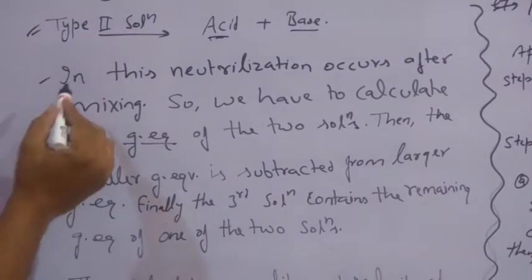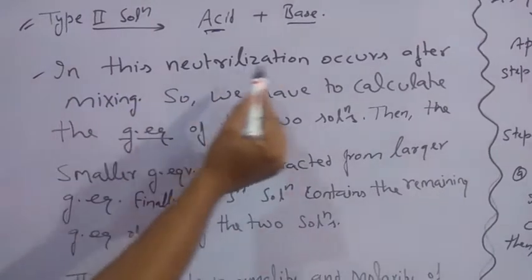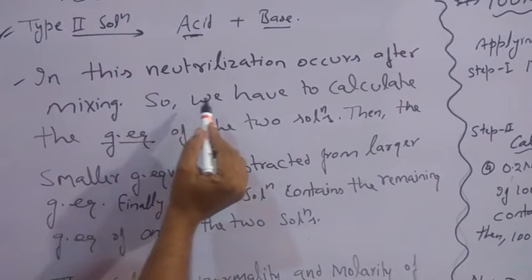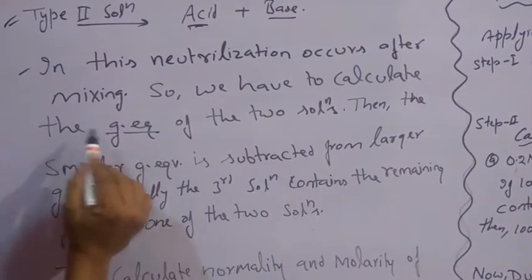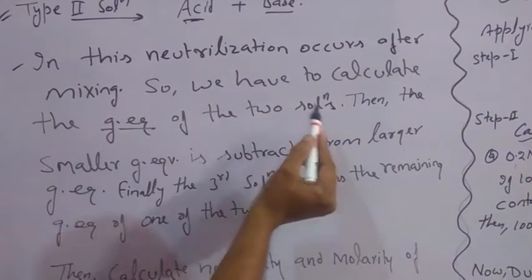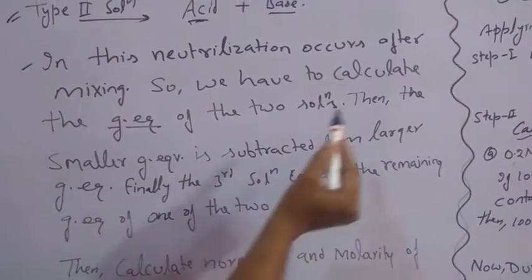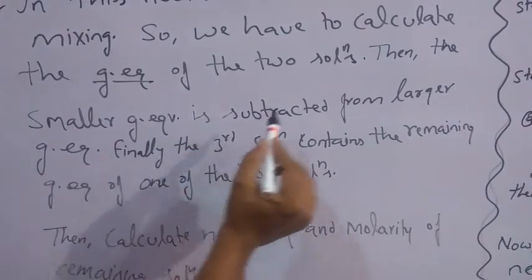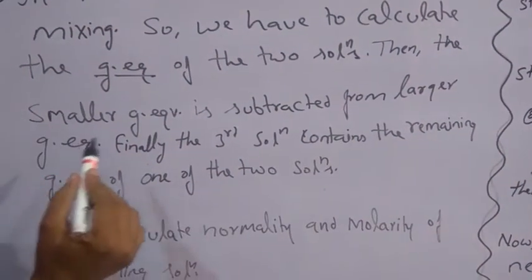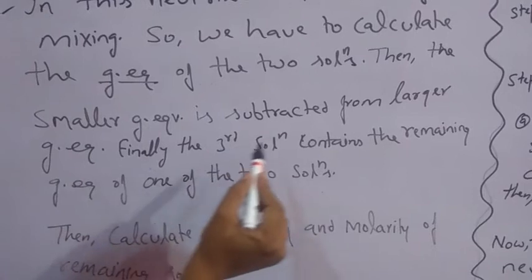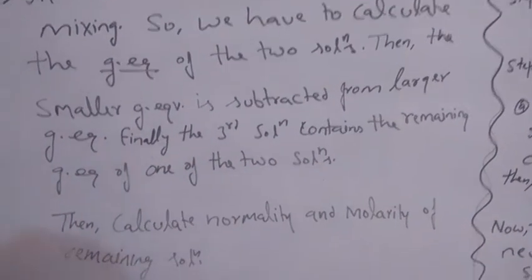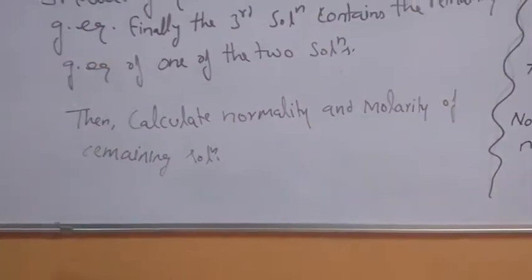Please pay attention. In this solution, neutralization occurs after mixing the solutions. We have to calculate the gram equivalents of the two solutions in their given volume. Then the smaller gram equivalent is subtracted from the larger gram equivalent. Finally, the third solution will contain the remaining gram equivalent of one of the two solutions. Then we calculate the normality and molarity as we will do in the numerical.